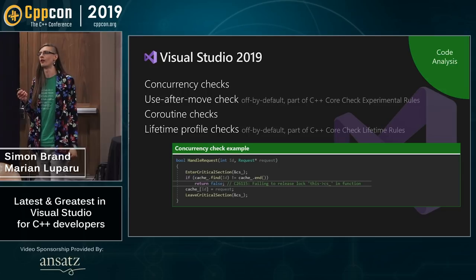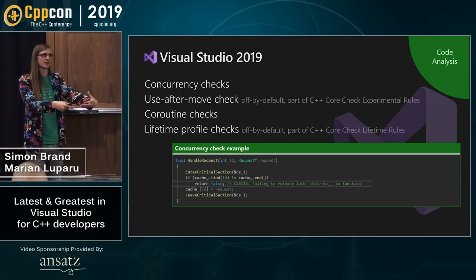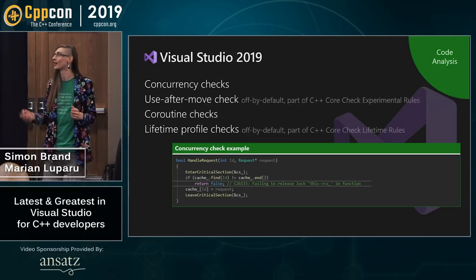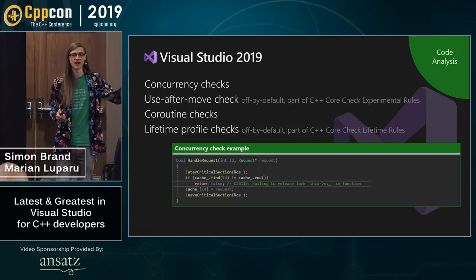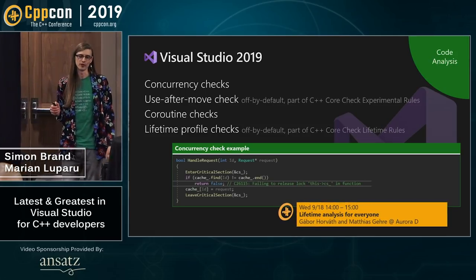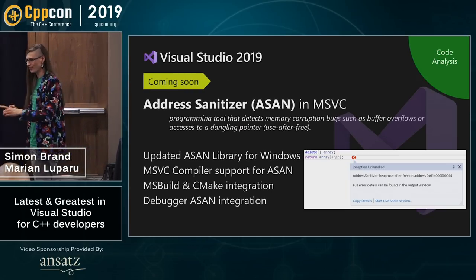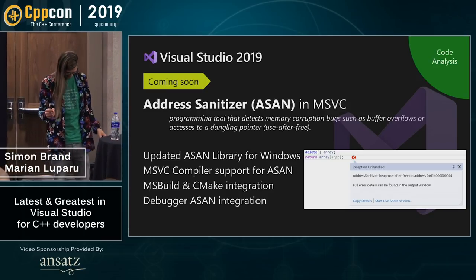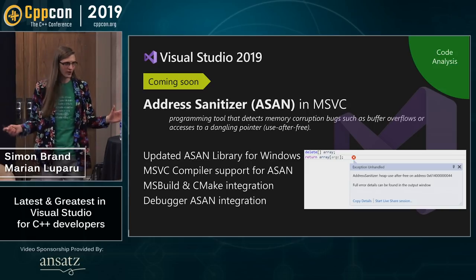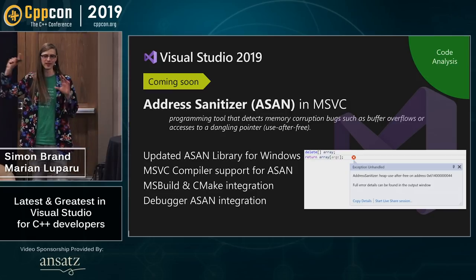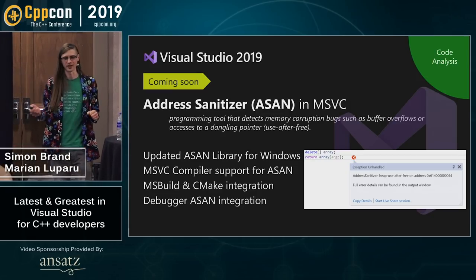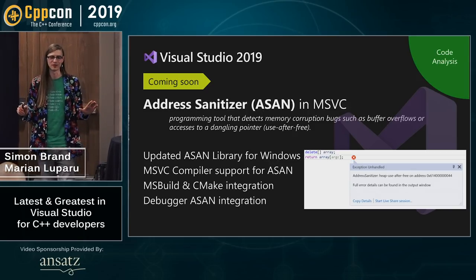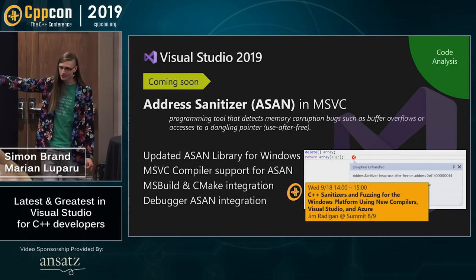On code analysis: new concurrency and coroutines checks, use-after-move checks, and the Lifetime Profile — which you may have heard about last year — are all available. Address Sanitizer is coming to MSVC. Static analysis is part of the puzzle, but dynamic analysis with ASAN is also super helpful for making programs safe. You get debugger integration and MSBuild/CMake integration. There's an entire talk on ASAN on Wednesday.